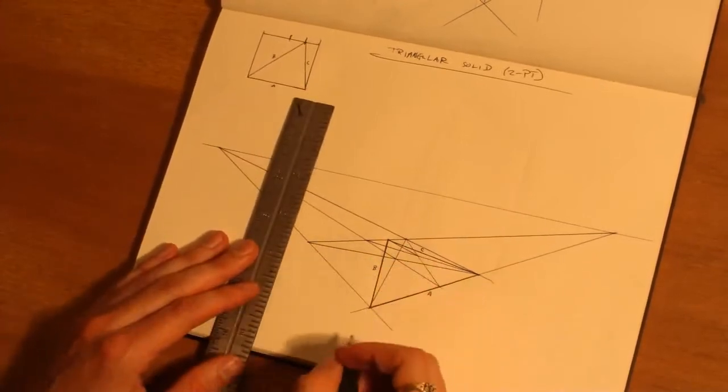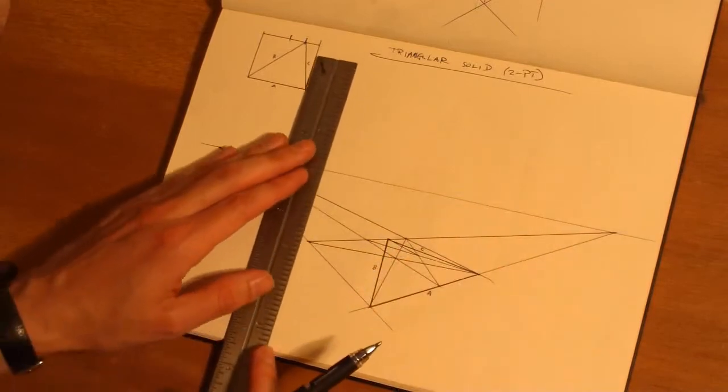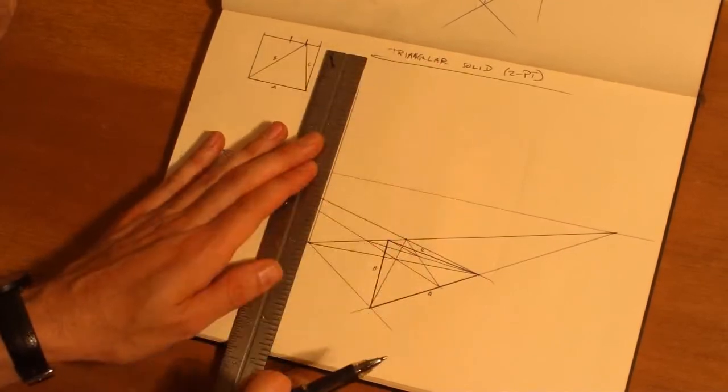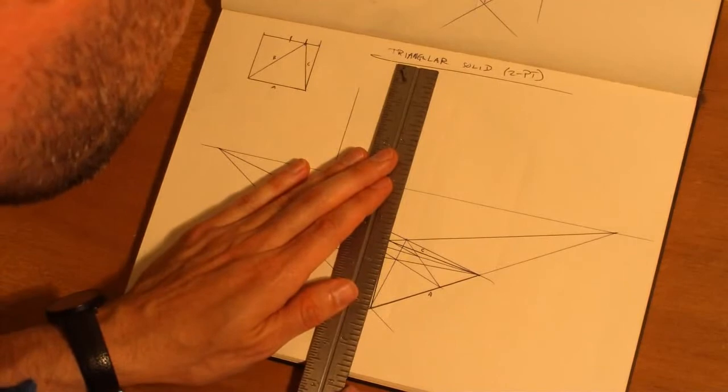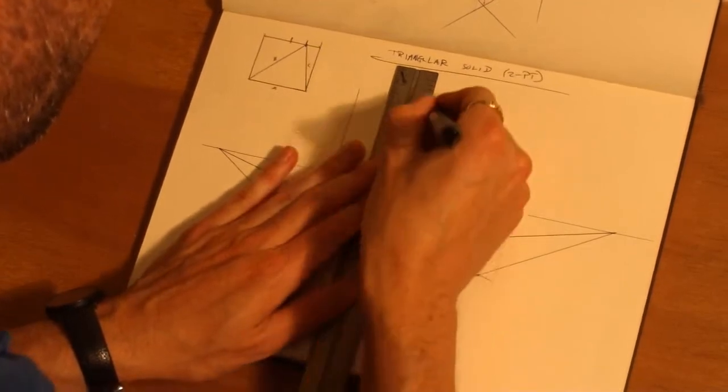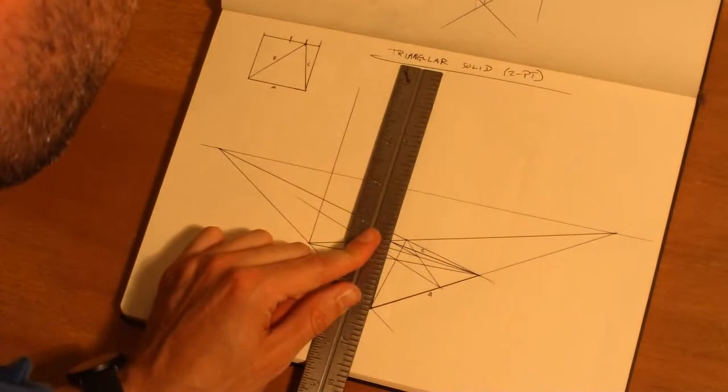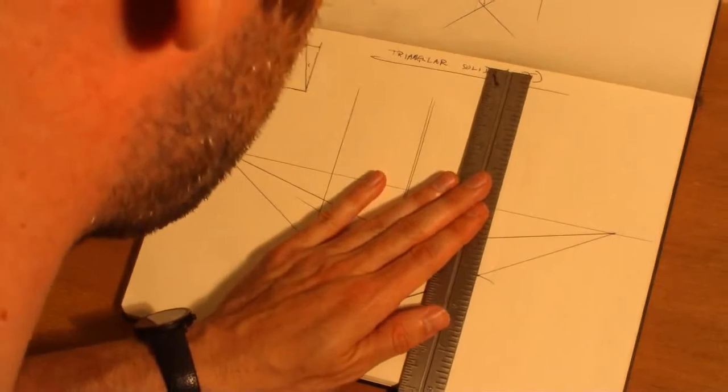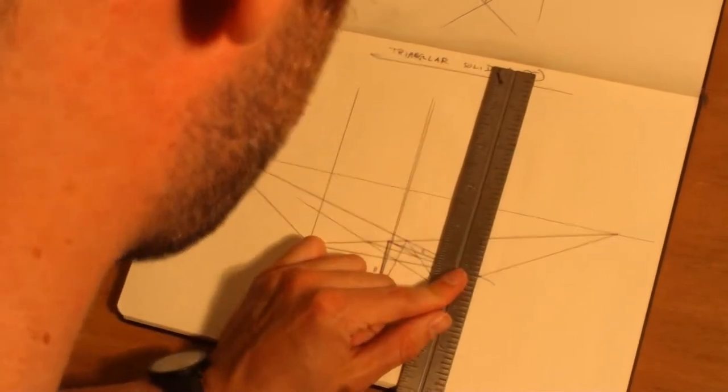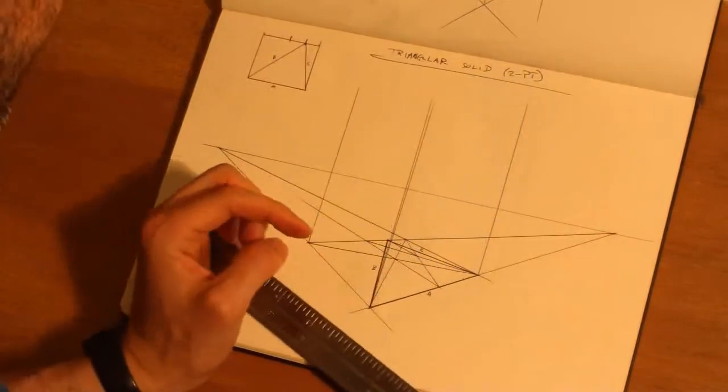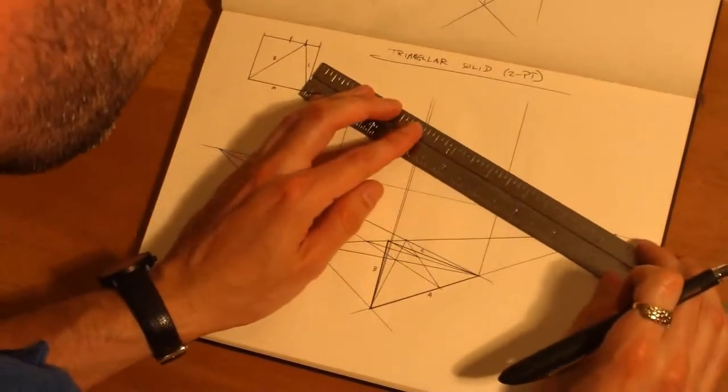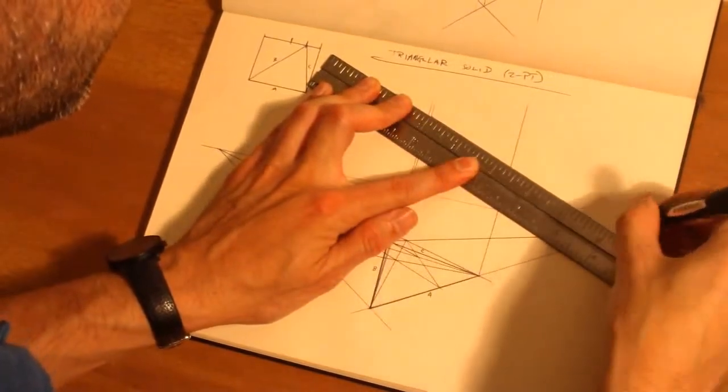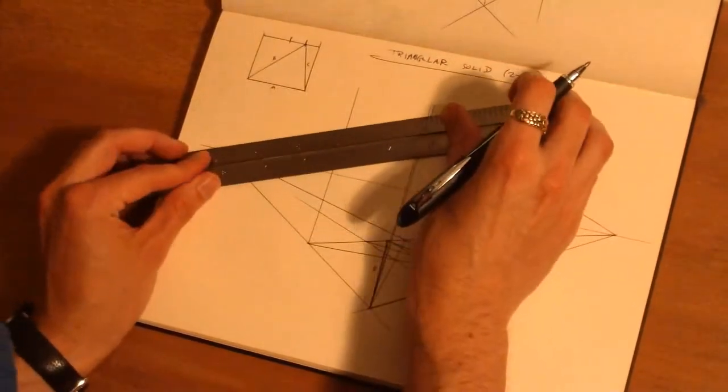So now we're gonna ignore this triangle for a minute and we're just going to project our rectangle upwards. We're a little off there - that's a little better, more accurate. And then we're going to go one more vertical. So all we're doing right now is projecting our rectangle upwards, so we're finding all of our planes.